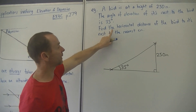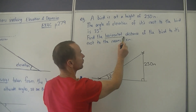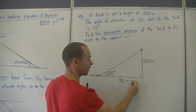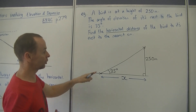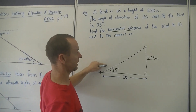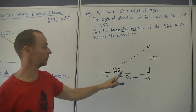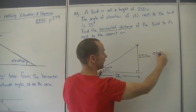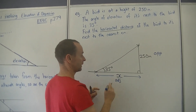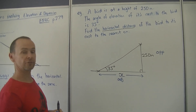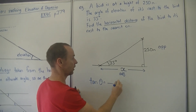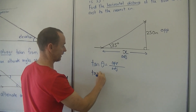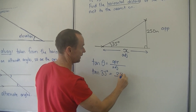Now what do we have to find? A lot of people don't read this carefully. Find the horizontal distance of the bird to its nest - the horizontal distance is this distance across here, so that is x. It's not the distance between the bird and its nest as in a line of flight. Now we've got a triangle and we do the same process. There's the angle - this one's called the opposite, this one's the hypotenuse, so this one is the adjacent. Which rule do we use? SOH CAH TOA - tan. Tan theta equals opposite over adjacent.